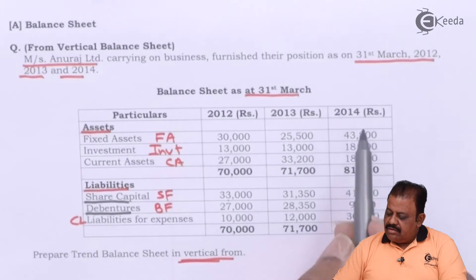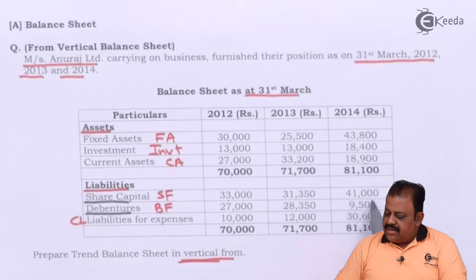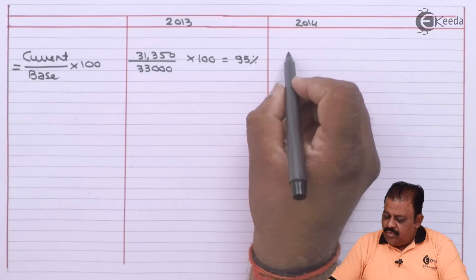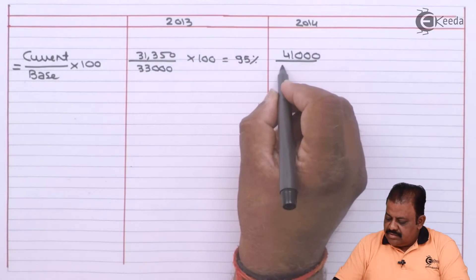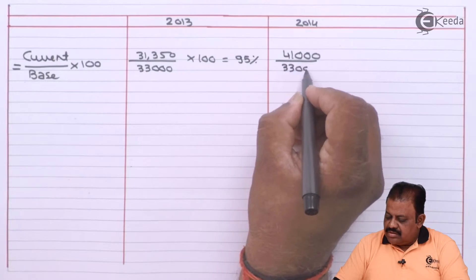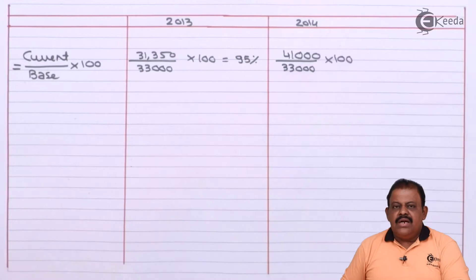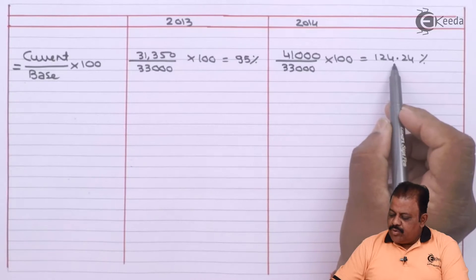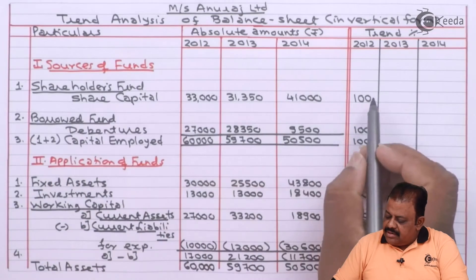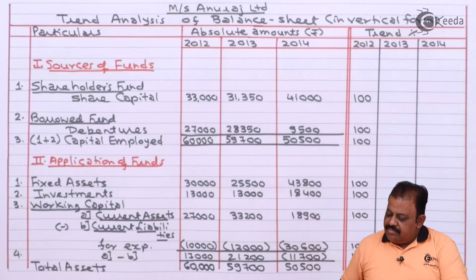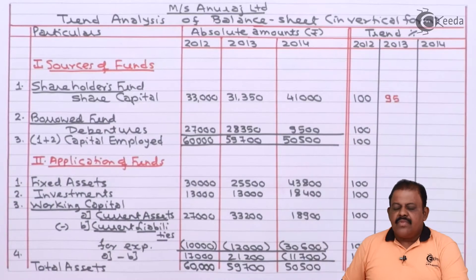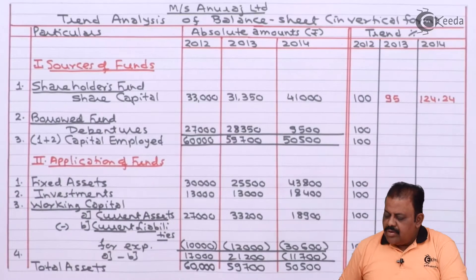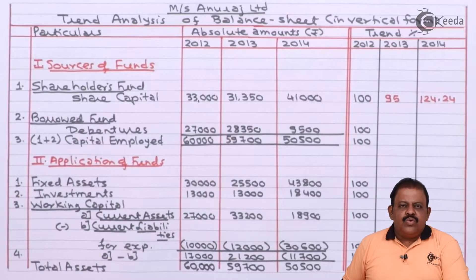In 2014, share capital has become 41,000. Dividing by the base year value of 33,000 and multiplying by 100 gives 124.24 percent. So for share capital: base year = 100, 2013 = 95 percent, 2014 = 124.24 percent.